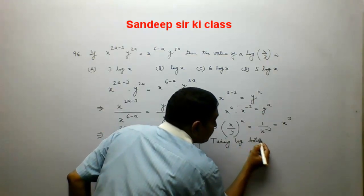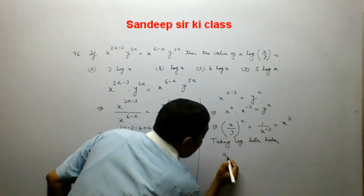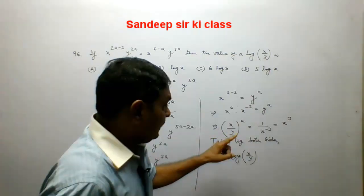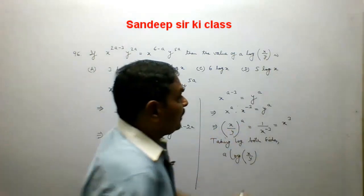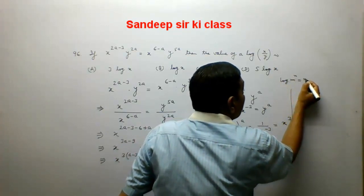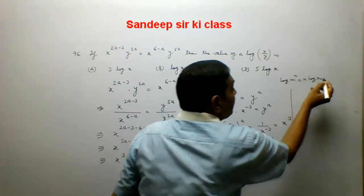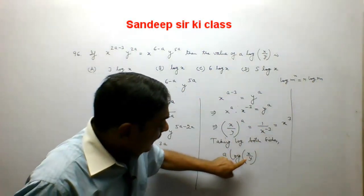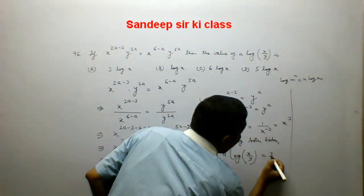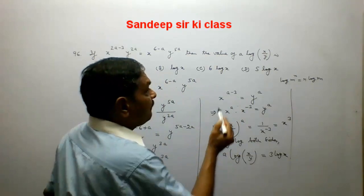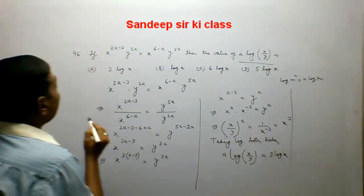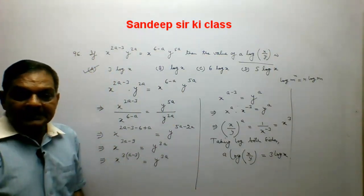Taking log on both sides: the left-hand side gives a log(x upon y), using the rule that log of m to the power n equals n log m. The right-hand side gives 3 log x. Therefore the value of a log(x upon y) is 3 log x, and hence option A is the correct answer.